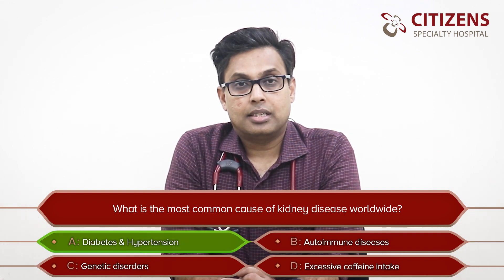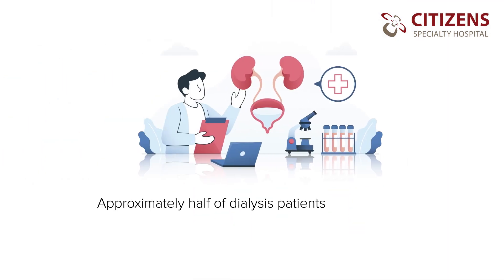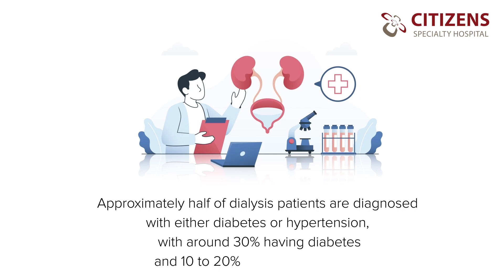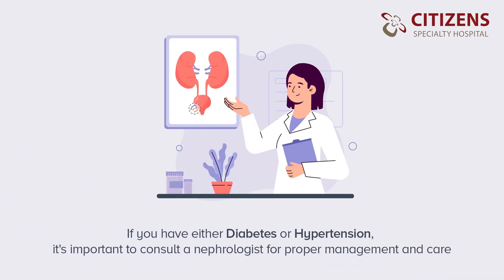And the answer is diabetes and hypertension. Around 30 percent of patients that need dialysis will have a diagnosis of diabetes, and another 10 to 20 percent are patients with hypertension. So about 50 percent of patients on dialysis will have one of these two diseases. These are modifiable diseases, and paying adequate attention to controlling diabetes and hypertension could reduce your risk of developing chronic kidney disease. Please consult your nephrologist if you have either of these two diseases.